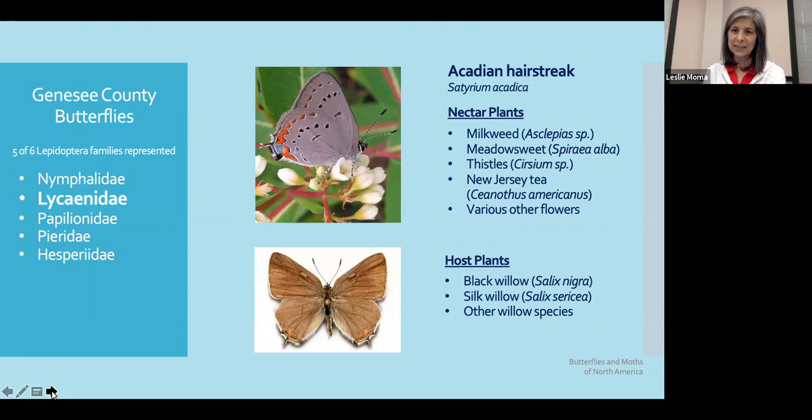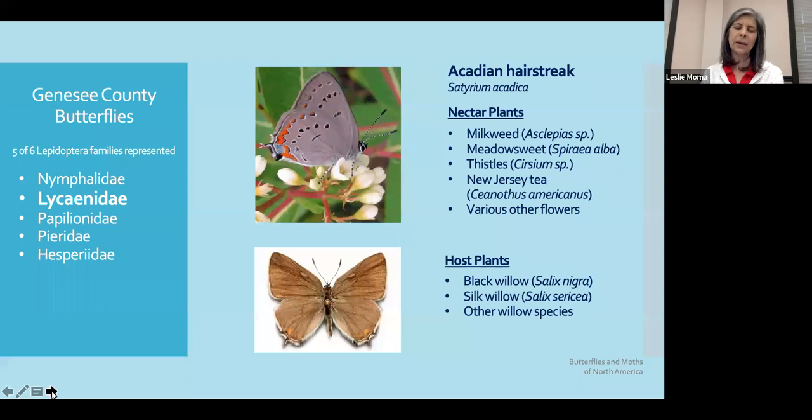The next butterfly we're going to look at is the Acadian hairstreak. They too like milkweeds and spirea, as well as other flowers that have short corollas. Their host plants are going to be the woody-stemmed willows — they are in the Salix family, with some specificity in the type of willow they're looking for when laying their eggs.